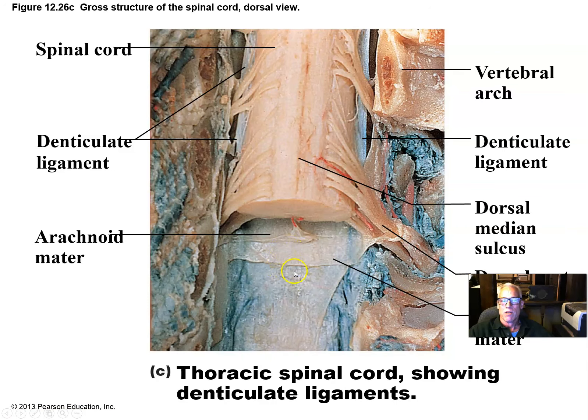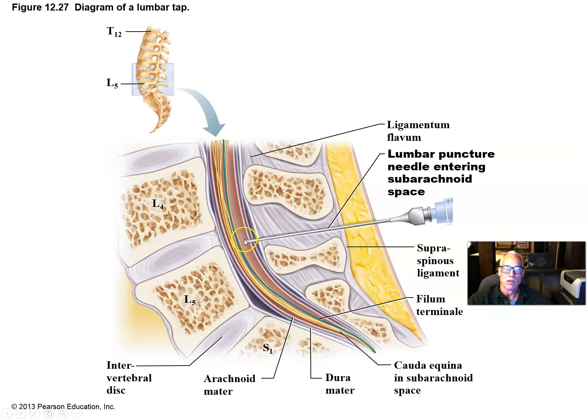There's no spinal cord down in this more inferior lumbar region. If there's a need to sample cerebrospinal fluid — for instance in cases of meningitis or encephalitis — we take it from the inferior lumbar region where there's no danger of the needle damaging the spinal cord. The nerves there are wrapped in their connective tissue sheaths and can be bumped aside by the needle. If the spinal cord itself were punctured, there would be permanent losses in function. This procedure is called a lumbar puncture or spinal tap.